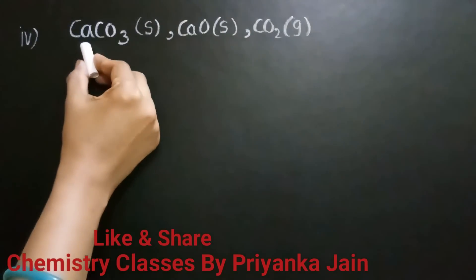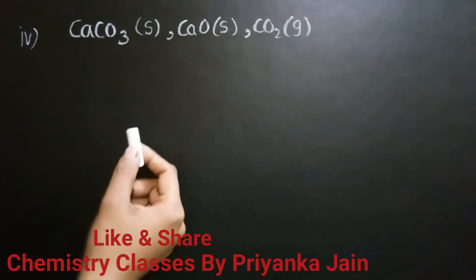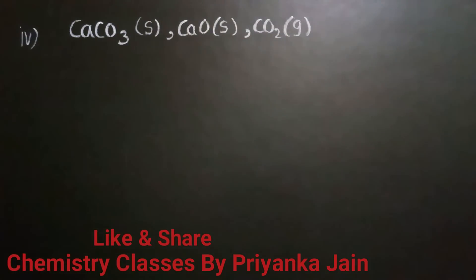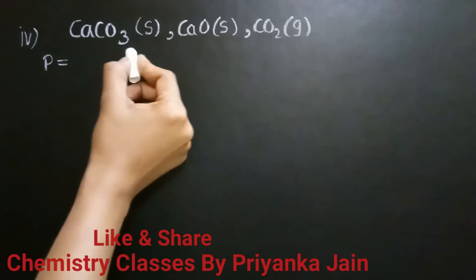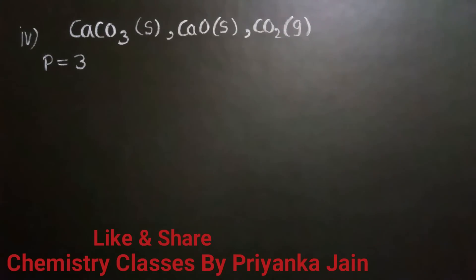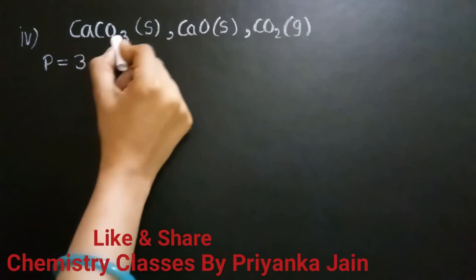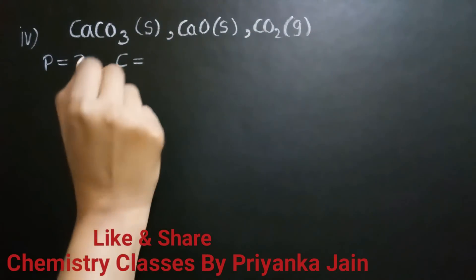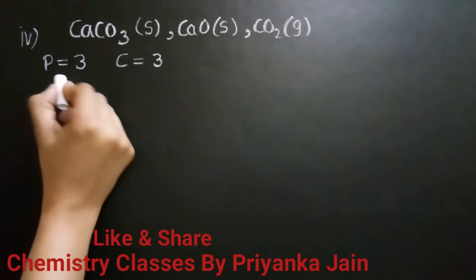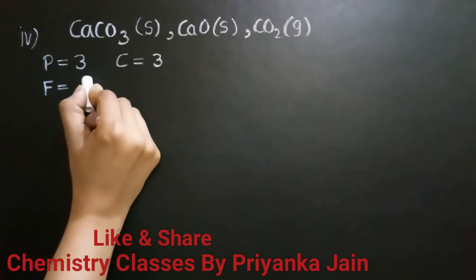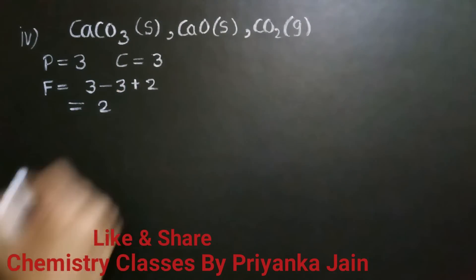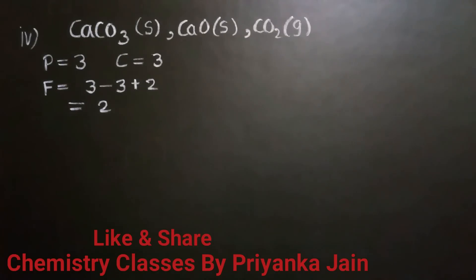Another example: a mixture of calcium carbonate solid (CaCO₃), CaO solid, and CO₂ gas. If we take a mixture of these three, solids form different phases and the gas forms another, giving three phases. The components are three since we need to know the concentration of all of them. So F = C − P + 2 = 3 − 3 + 2 = 2. The degree of freedom is two.